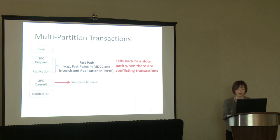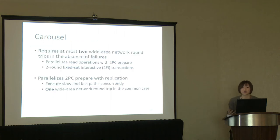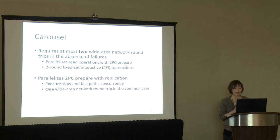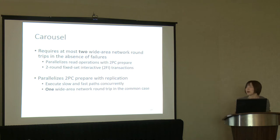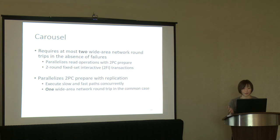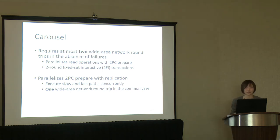This high latency motivated us to build Carousel, a distributed system that can complete a transaction in at most two wide area network roundtrips when there is no failure. Carousel does this by parallelizing the read operations with 2PC prepare. This is possible because we are targeting a slightly less general transaction model, which we call 2FI transactions. Carousel can further reduce latency by parallelizing the 2PC prepare with the replication. Similar to other systems, it borrows ideas from faster Paxos, but the difference is Carousel is able to run the slow and the faster path at the same time by modifying the consensus protocol.